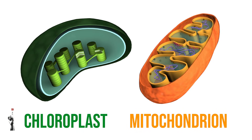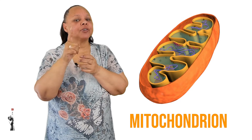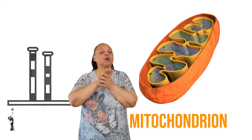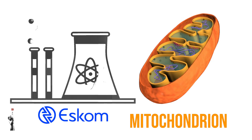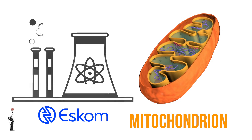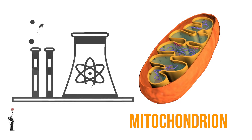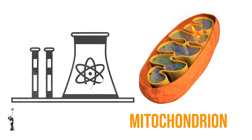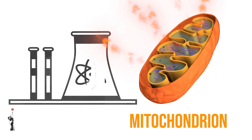They are both oval shaped and should not be confused with each other. Mitochondria are often referred to as the powerhouses of the cell. Just like ESKOM is responsible for providing us with electricity, the mitochondria is responsible for providing the energy that cells need to perform their functions.